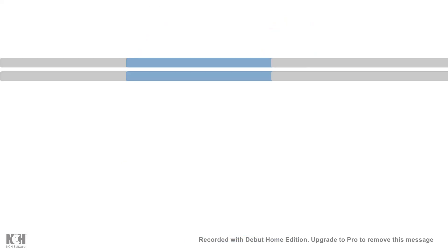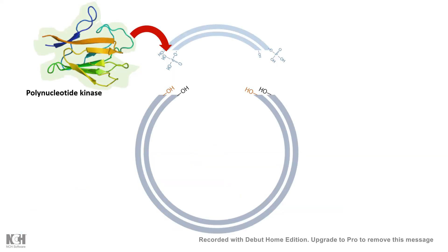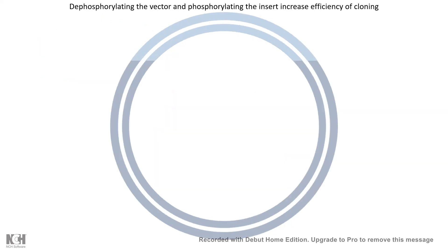Especially when we are using PCR products as an insert, it is not phosphorylated at the end. In order to phosphorylate that, we can use polynucleotide kinase to phosphorylate the ends of the PCR product. Thereby, dephosphorylating the vector and phosphorylating the insert increase the efficiency of the cloning.